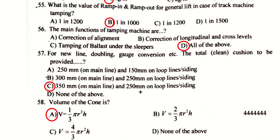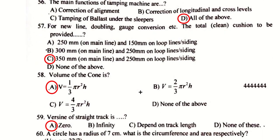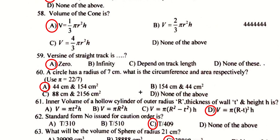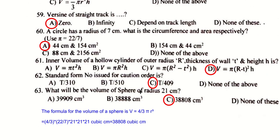For new lines, doubling, gauge conversion, etc., the total clean cushion to be provided is 350 mm on main lines and 250 mm on loop lines or sidings. The volume of a cone is one-third π r² h. The sine of a straight track is zero.